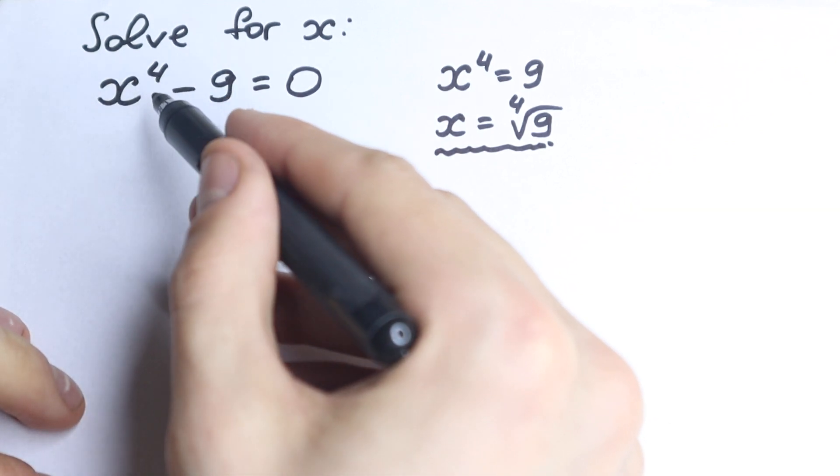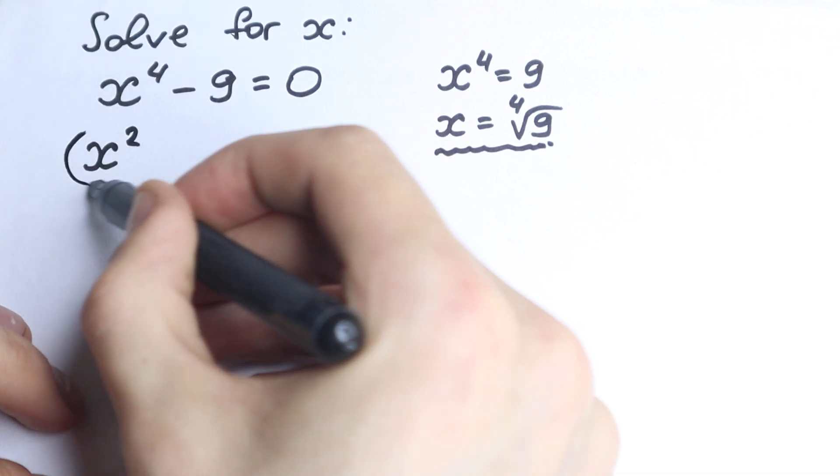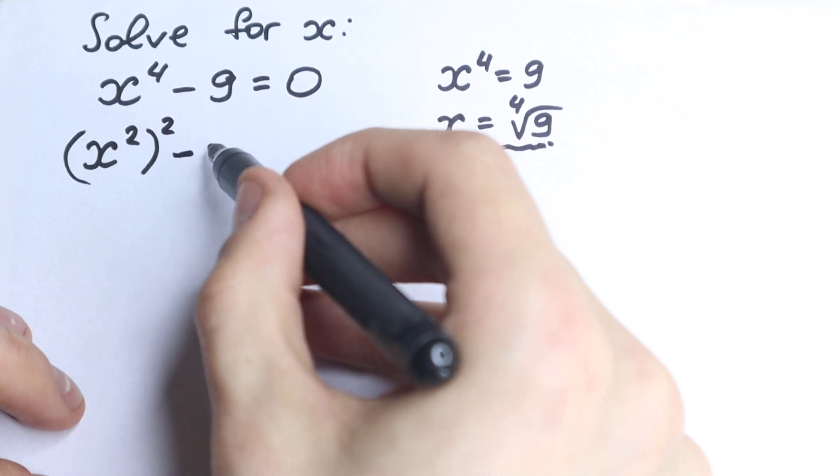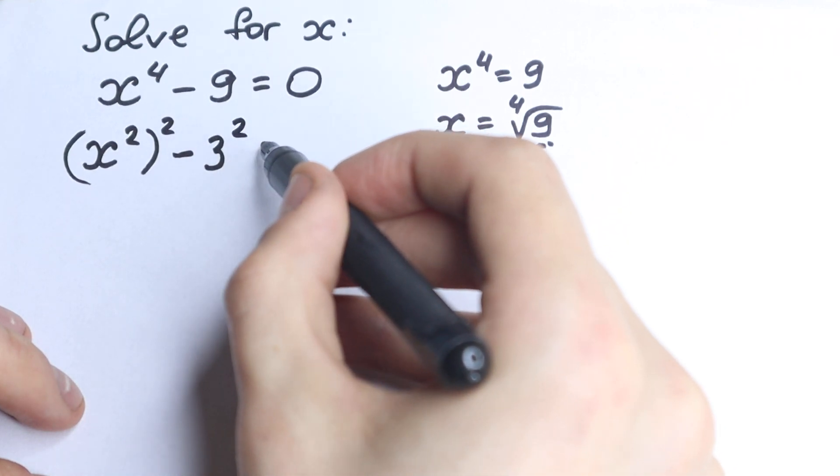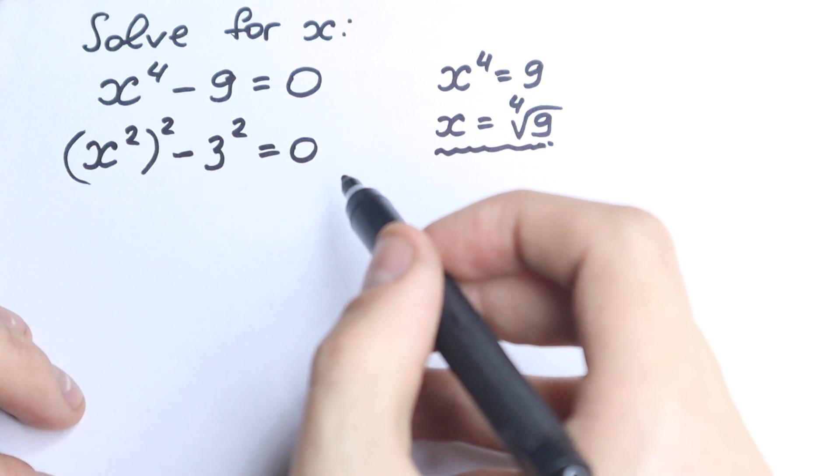We have x to the fourth power. We can write x to the fourth as x squared to the second power, and this nine we can write as three squared. Okay, really great. It's three squared equal to zero. And what are we going to do next?